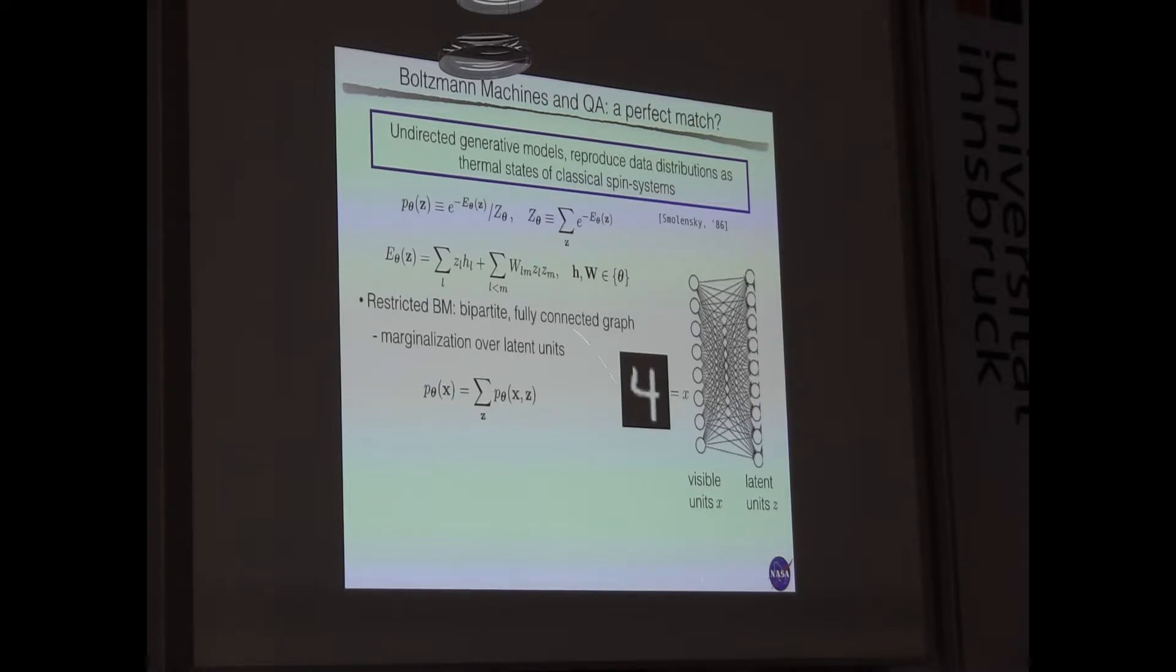And the goal is to have a spin system with thermal distribution approximate your data distribution. And these models are known. Quantum annealers really are simulators of Boltzmann machines. And typically what you do, you take your sample, your data, you map it into a layer of visible variables, you use another layer of latent units, and then the trick with this bipartite connectivity is that you can do this marginalization analytically. So you get this model data, and this is what you want to adjust to reproduce data distribution.